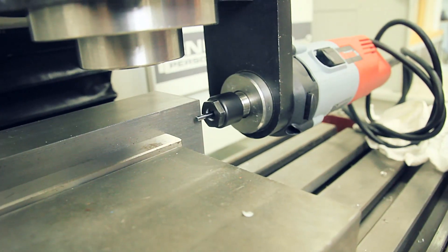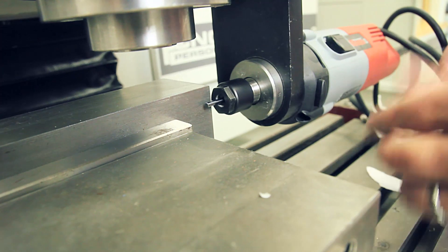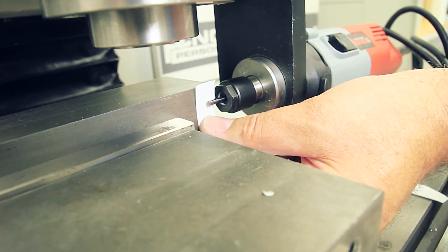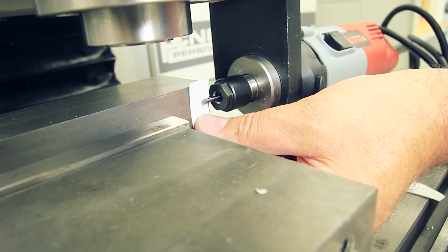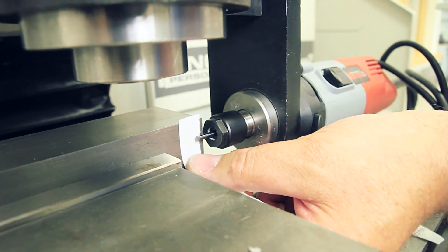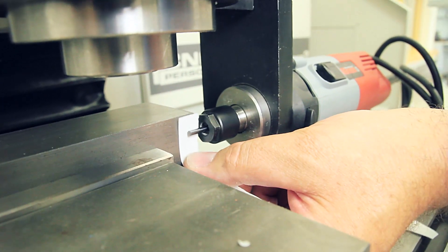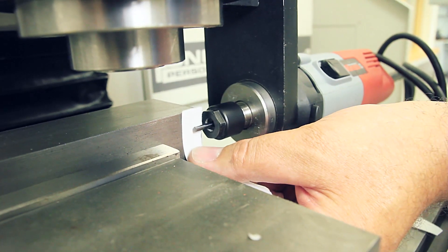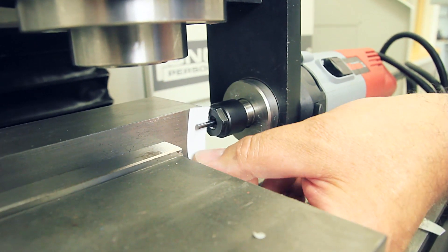You just slide the paper between your workpiece and this could be a dowel pin, the end mill shank, whatever you have handy. Just keep moving your table until you feel a light drag on the paper between the tool and the workpiece.